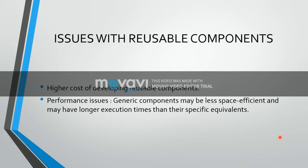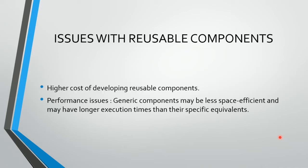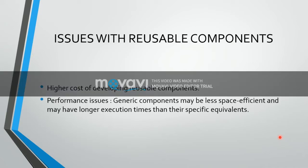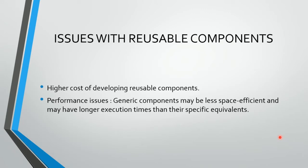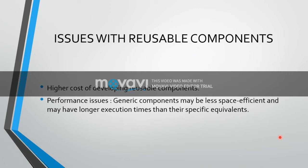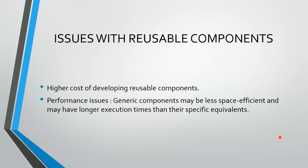A performance issue with reuse is that a generic component may be less space efficient and may have longer execution time than a specific equivalent. When reusing a component developed in a previous project, we need to be concerned about time complexity and space complexity. We are not just satisfied with developing code — we need to compare space and time, meaning memory and resources needed to execute the program. This is a concern and can create a little problem.